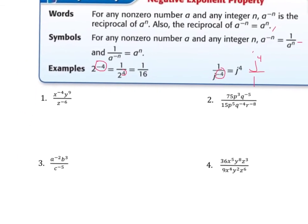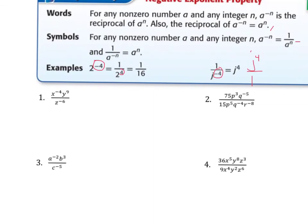Let's look at our first example. We have three different terms: x, y, and z. We are not going to be adding or subtracting any of our exponents because we don't have matching variables on the top and bottom. But we do have some negative exponents. Anything with a negative exponent on top goes down to the bottom. So we can rewrite this as y to the ninth on top, times z to the sixth, over x to the fourth. That's our final answer.